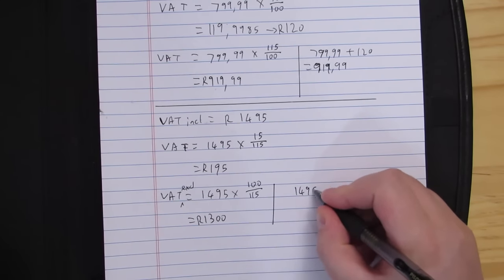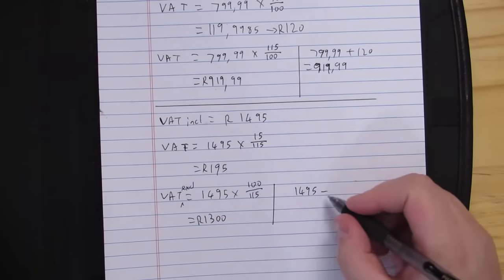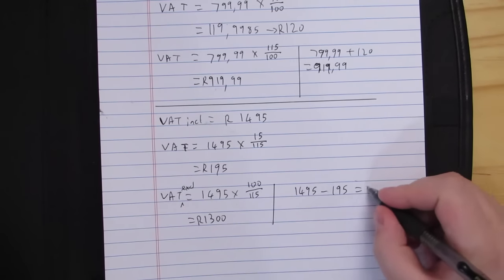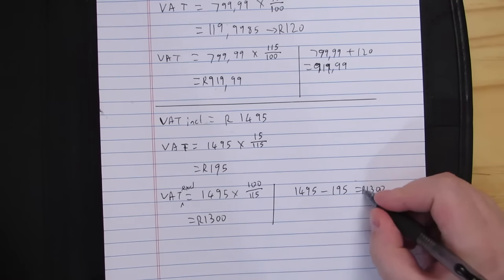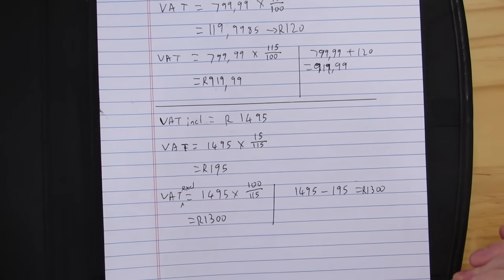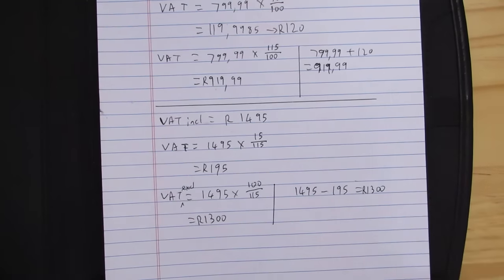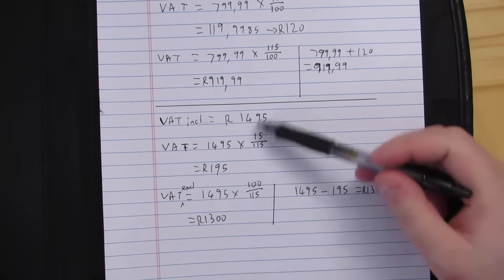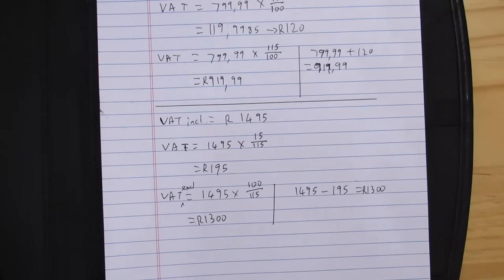Alternatively, I can take my 1,495 and subtract from it my VAT amount of 195 that I worked out earlier, and that would also give me 1,300 Rand as my VAT exclusive amount. I usually like to use the formula because it makes a bit more sense and we can make sure everything is right.